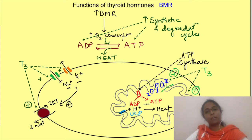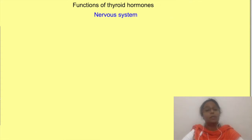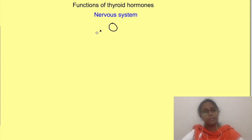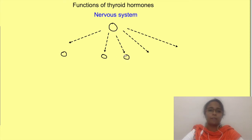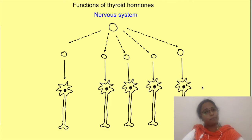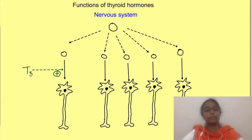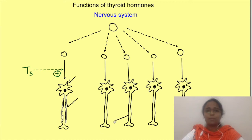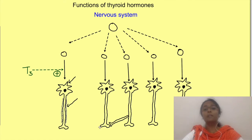Now let us see the specific effects of thyroid hormones on various organ systems. In the nervous system, thyroid hormones are essential for differentiation and maturation of neurons. For normal development of the nervous system, which starts in fetal life, it is important that precursor cells divide for some time, and then multiplication stops and they differentiate and mature. Thyroid hormones are essential for making this switch and promoting differentiation and maturation of neurons. During this time, dendrites branch and grow, axons grow, myelination of neurons occurs, and synapse formation takes place. In later life, thyroid hormones also maintain mental alertness.